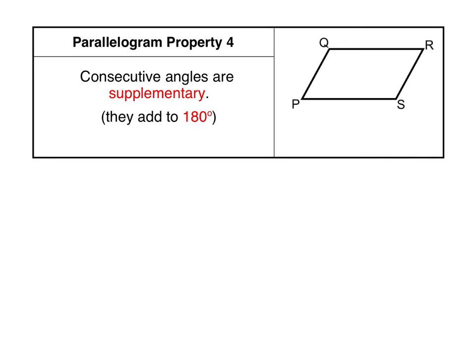Parallelogram property number 4 tells us that consecutive angles are supplementary, meaning they add to 180 degrees. For example, if angle P is 70 degrees, then opposite angle R is also 70 degrees. The consecutive angles Q and S each equal 180 minus 70, which is 110 degrees. So all pairs of angles next to each other — P and Q, Q and R, R and S, and P and S — each add to 180.